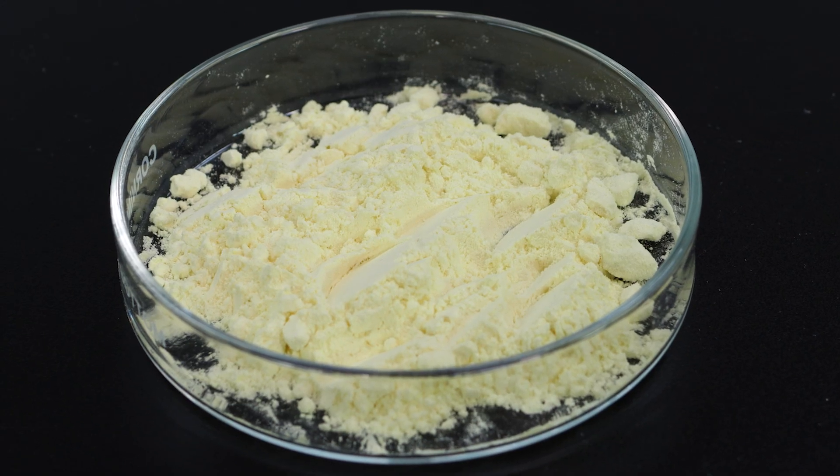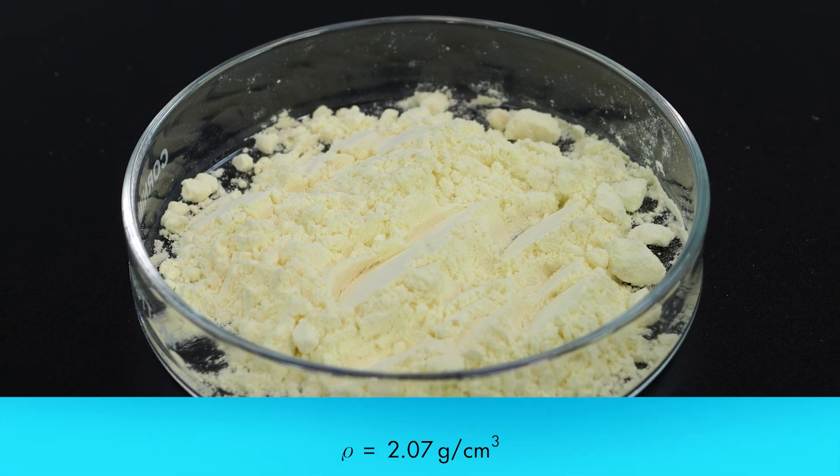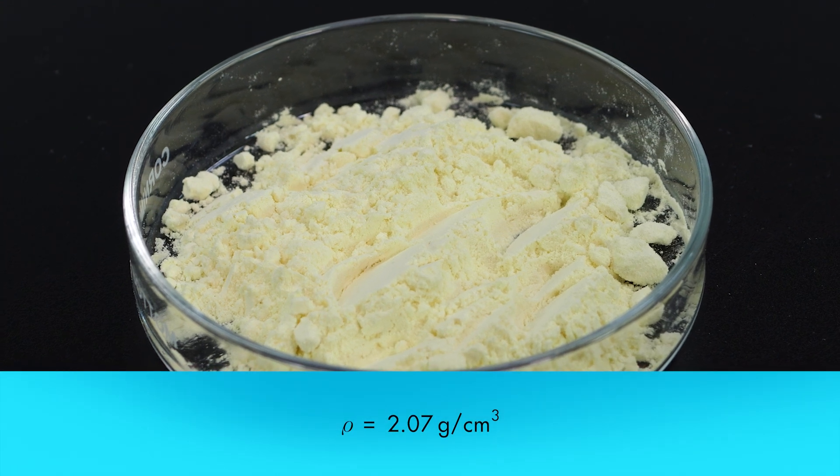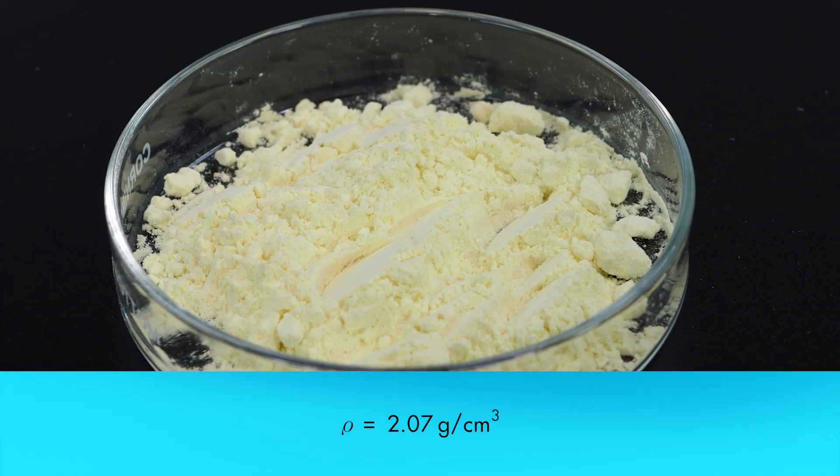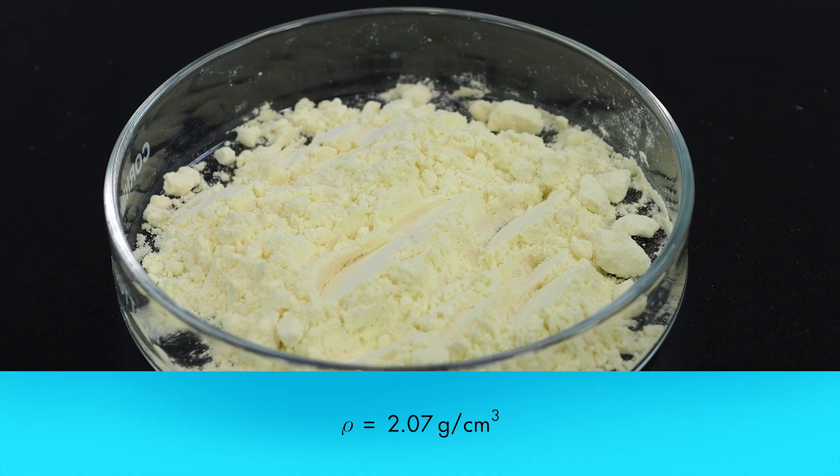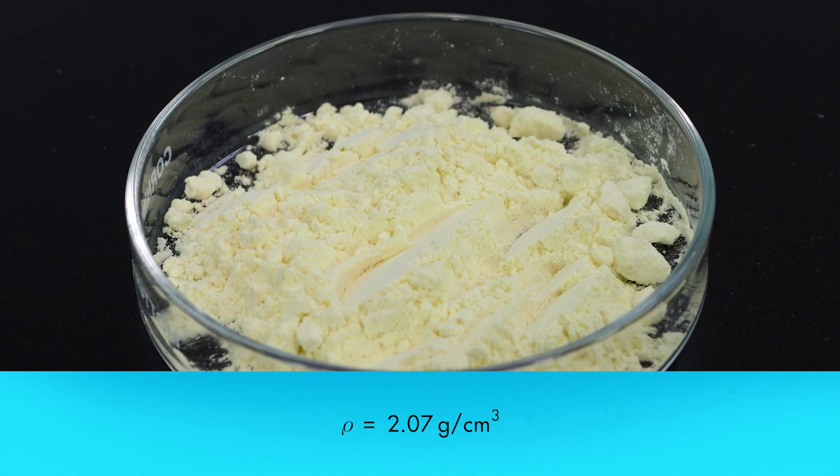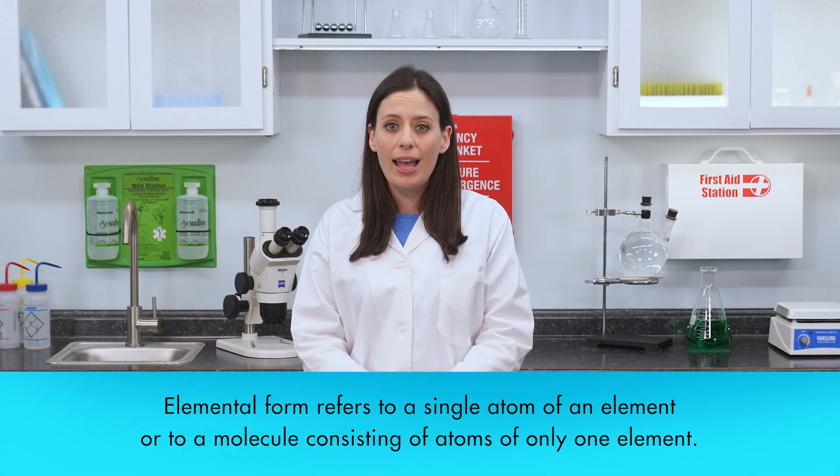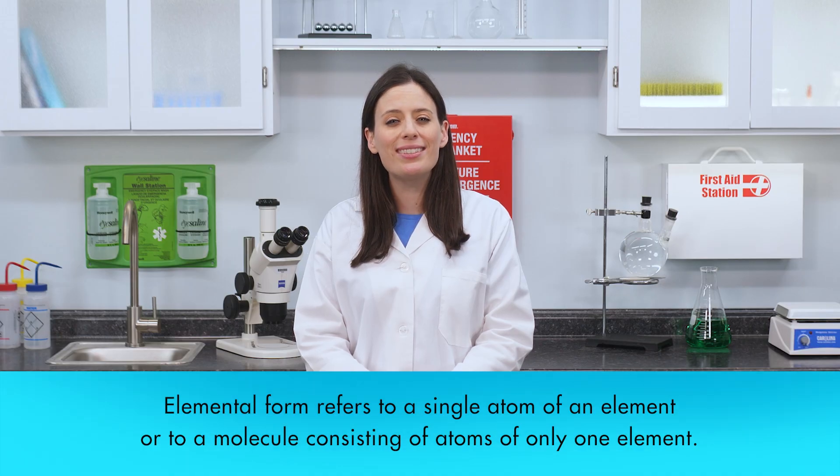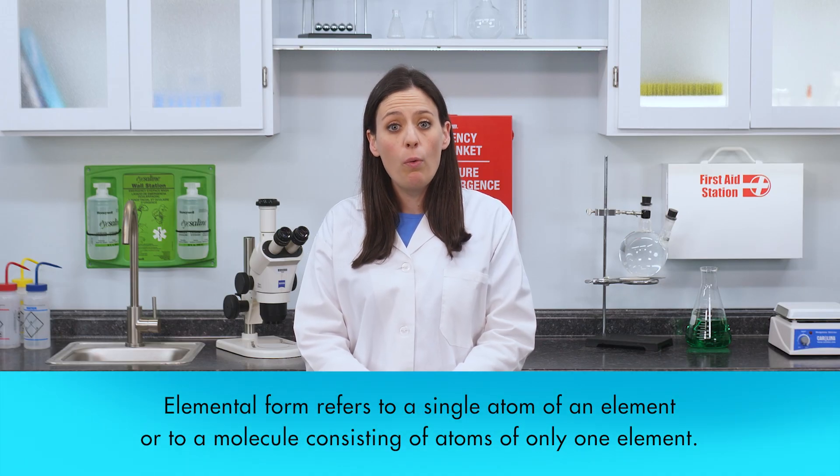The density of the most common form of solid sulfur is 2.07 grams per cubic centimeter, which makes it about twice the density of water. Sulfur exists in more than one elemental form. Elemental form refers to a single atom of an element, or to a molecule consisting of atoms of only one element.